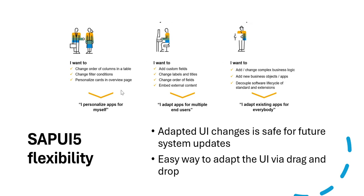In the end user section, for example, if I have an application with a form and I want to make minimal changes — like changing the column layout, changing form headlines, or personalizing the cards in my overview pages — the end user can do these themselves using Adapt UI. There is no dependency on the developer and no programming or technical knowledge required.